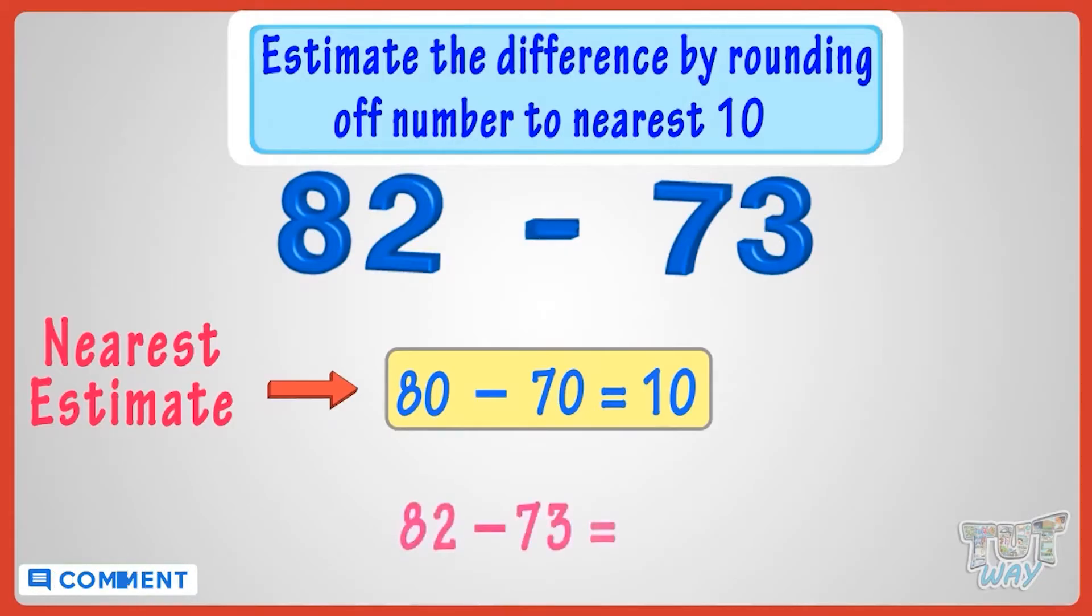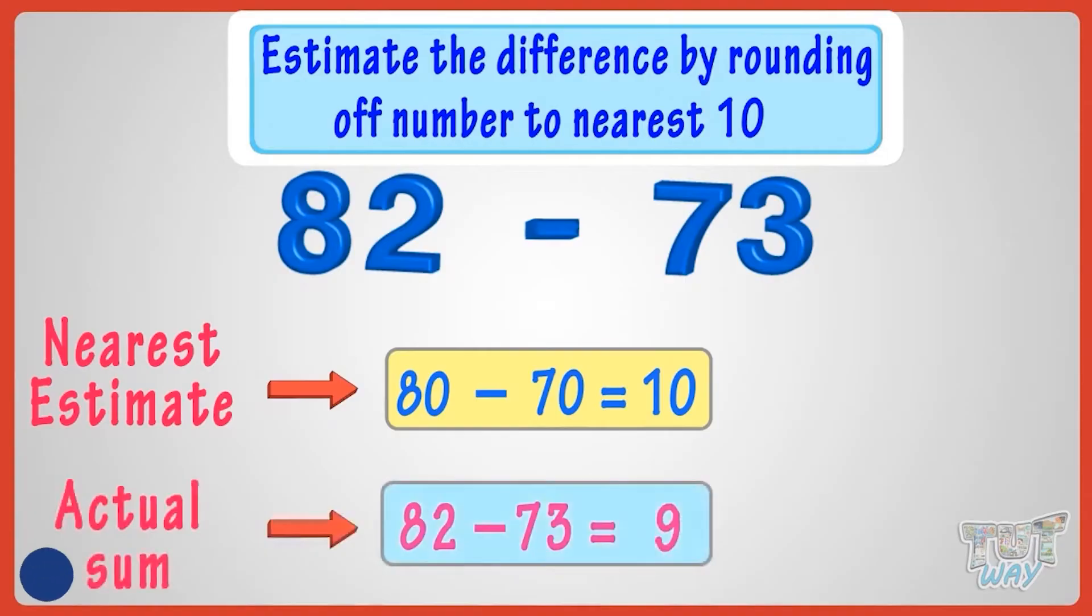Now let's compare the estimate with the actual answer. 82 minus 73 is 9, so your estimate is very near. Our estimate was 10 and the actual difference is 9. Good.